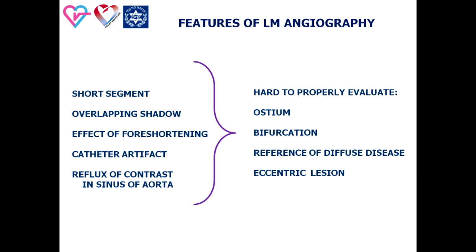Coronary angiography in patients with left main coronary artery disease has well-known limitations due to overlapping and foreshortening of vessel shadows, catheter artifact, and reflux of contrast material in the sinus of the aorta during injection. These imaging limitations explain challenges to proper evaluation of the ostium, bifurcation, reference of diffuse disease, and eccentric lesions at the site of the left main.